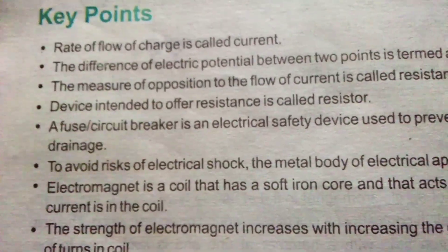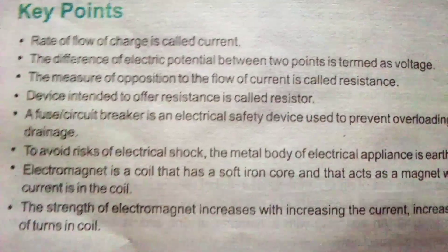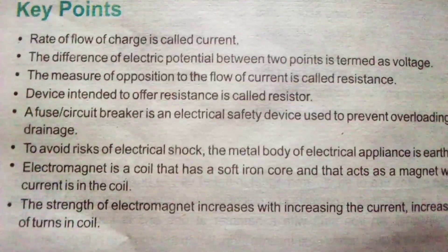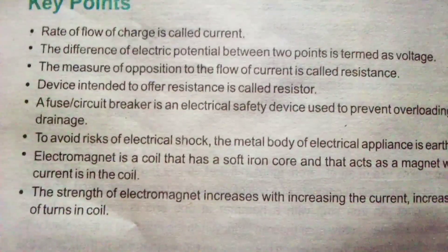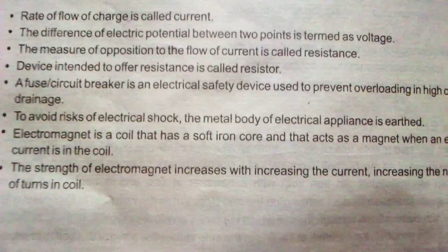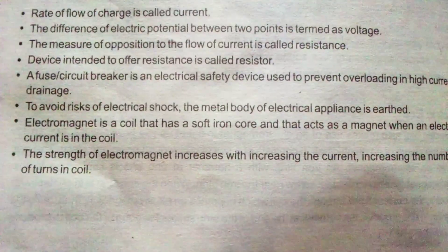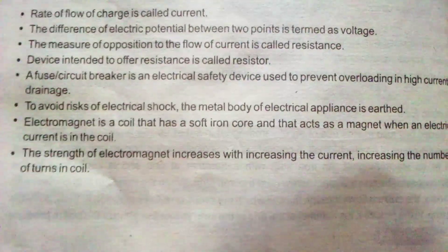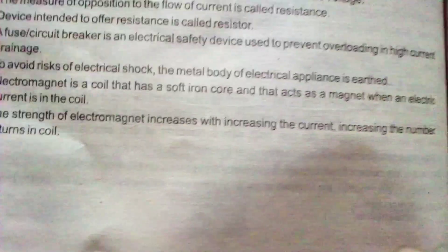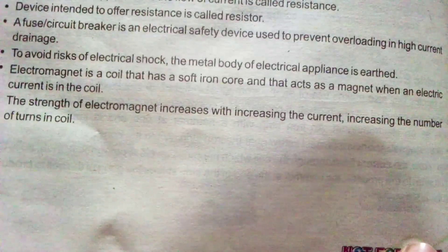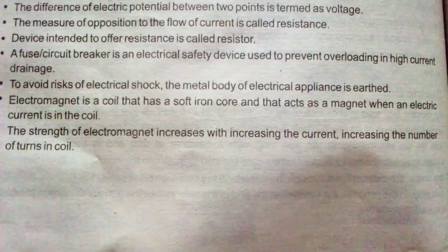Summary: The rate of flow of charge is called current. The difference of electric potential between two points is termed as voltage. The measure of opposition to the flow of current is called resistance. A device intended to offer resistance is called a resistor. A fuse or circuit breaker is an electrical safety device used to prevent overloading and high current. To avoid risk of electrical shock, the metal body of an electrical appliance is earthed. An electromagnet is a coil with a soft iron core that acts as a magnet when electric current flows; its strength increases by increasing current or number of turns.